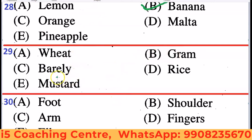Next: Wheat, Gram, Barley, Rice, Mustard. Rice is grown during the Kharif crop season, while all others — Wheat, Gram, Barley, and Mustard — are grown during the Rabi crop season. So Rice is the odd one out.